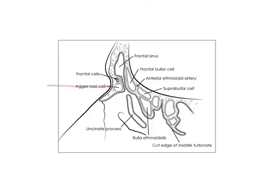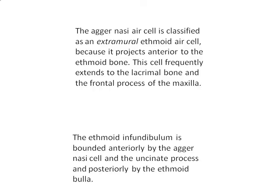These are the frontal cells, the frontal bullar cell, the bulla ethmoidalis, and the suprabullar cell. The agar nasi cell is classified as an extramural ethmoidal cell because it projects anterior to the ethmoidal bone. This cell frequently extends to the lacrimal bone and the frontal process of maxilla. The ethmoidal infundibulum is bounded anteriorly by the agar nasi and the uncinate process, and posteriorly by the ethmoidal bulla.